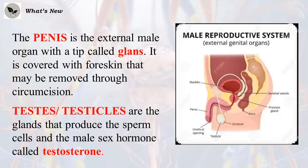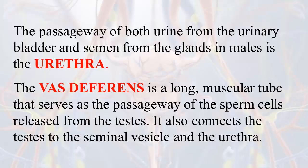The penis is the external male organ with a tip called the glans. It is covered with foreskin that may be removed through circumcision. The testes are the glands that produce the sperm cells and the male sex hormone called testosterone. The urethra is the passageway of both urine from the urinary bladder and semen from the glands in males. The vas deferens is a long, muscular tube that serves as the passageway of the sperm cells released from the testes. It also connects the testes to the seminal vesicle and the urethra.